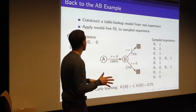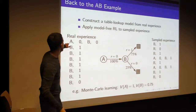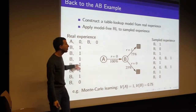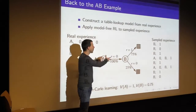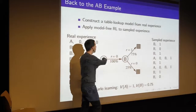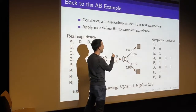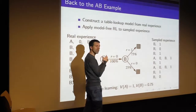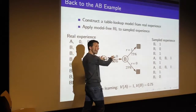So let's go back to our AB example. We started off with real experience, we generated a model, and now we've got this model we can use to sample experience. We could sample some trajectories from this. The model should also include some model of where you start in this case.